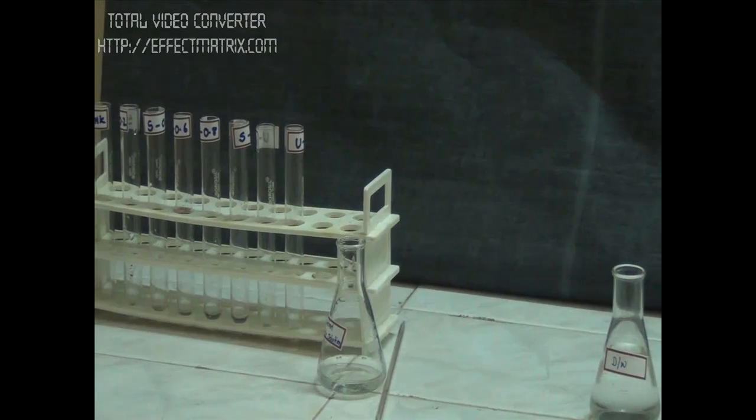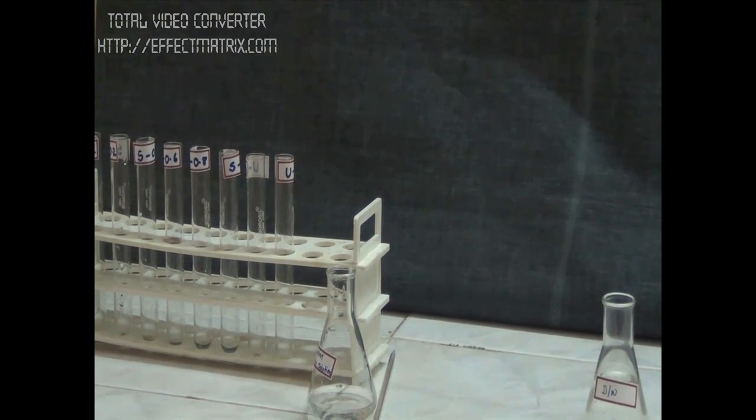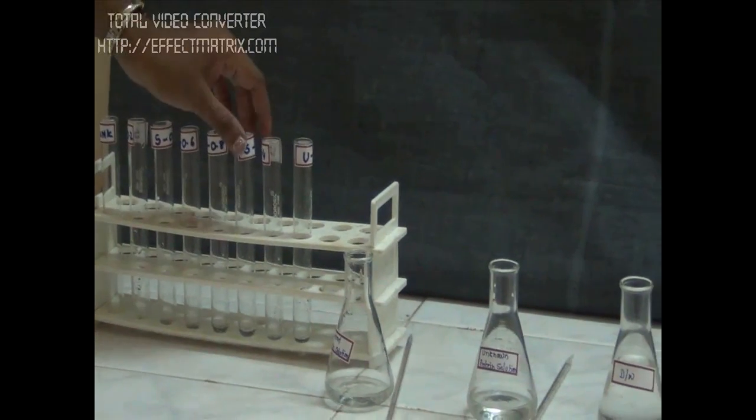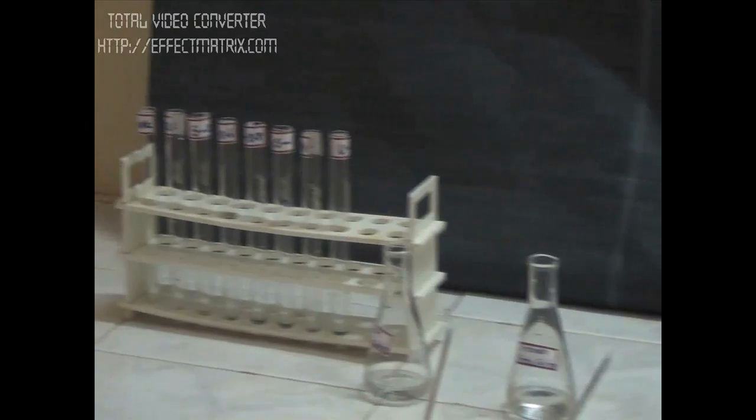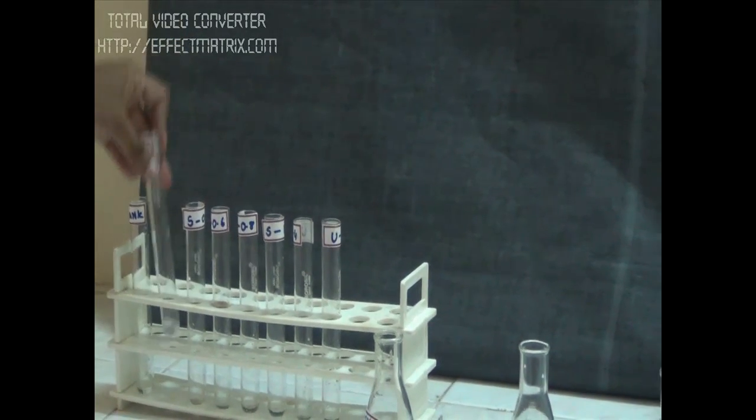we will prepare tubes with 0.2 ml, 0.4 ml, and 0.6 ml. Now we have added standard protein and unknown solution. We will add distilled water to all the tubes to make a final volume of 1 ml. Likewise we will prepare 1 ml in all the tubes.